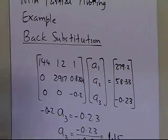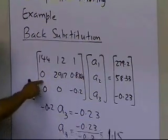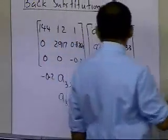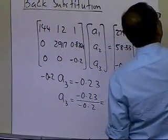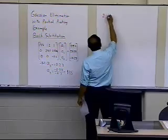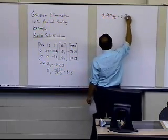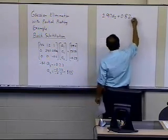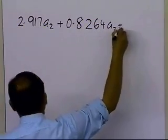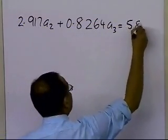Now let's calculate a2 from the second equation. We have 2.917 a2 plus 0.8264 a3 equals 58.33.